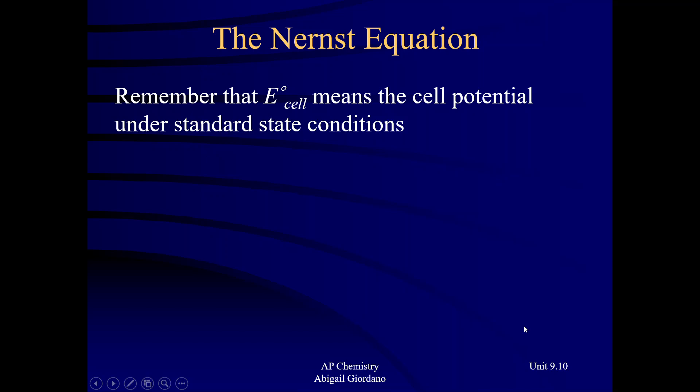The first thing I want to remind everybody: we've been talking about galvanic cells and calculating cell potentials — that's what this variable E cell means. That little degree symbol means standard state conditions. That means voltages measured with the system at 25 degrees Celsius, any aqueous solution at one molar, and any gases at one ATM.